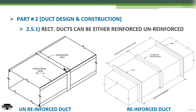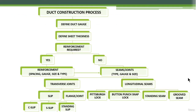Sometimes you need to reinforce your duct. In that case, you apply intermediate reinforcement between two transverse joints. As shown on the right side of the screen, the duct has longitudinal seams and transverse joints, and between the two joints there is intermediate reinforcement. The construction process of the duct defines all the details related to the sheet metal, joints, and reinforcement.